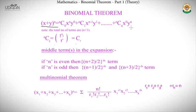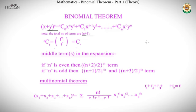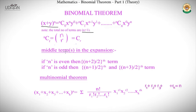Since one exponent goes from 0 to n and the other from n to 0, there must be n + 1 terms total. Hence the trivial but important result: the total number of terms in the expansion of (x + y)^n is n + 1.